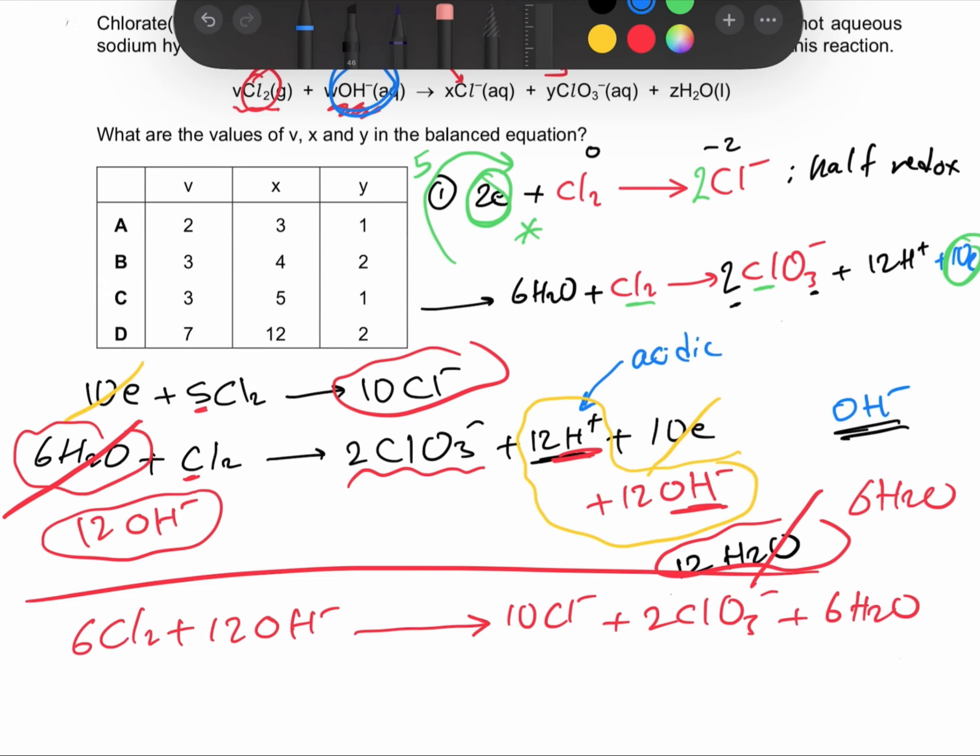Are we finished? Not yet. If we look at the answers, they are in very simplified forms. If we divide this equation over two, we will have 3Cl₂ plus 6OH⁻ gives 5Cl⁻ plus ClO₃⁻ plus 3H₂O.